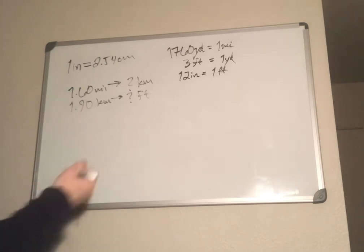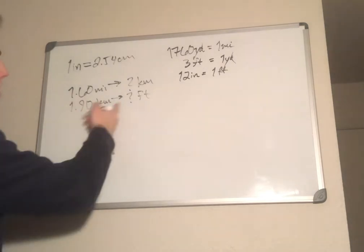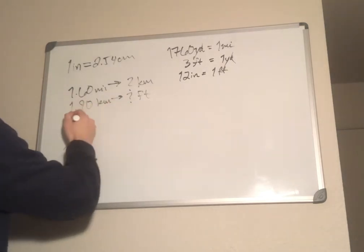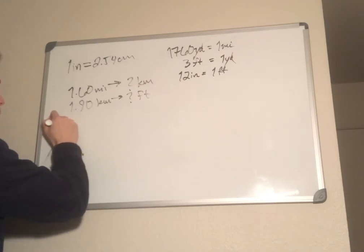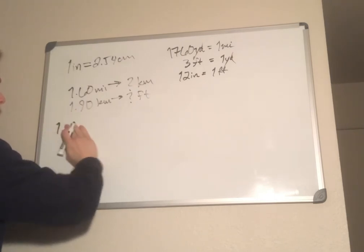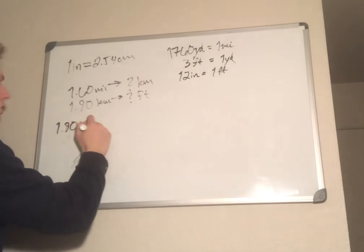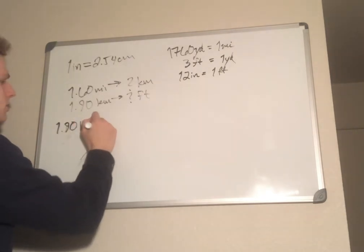Now for Part B: how many feet are in one kilometer? Let's start by writing out our given unit — 1.00 kilometers — and multiply by conversion ratios to work our way down to feet.